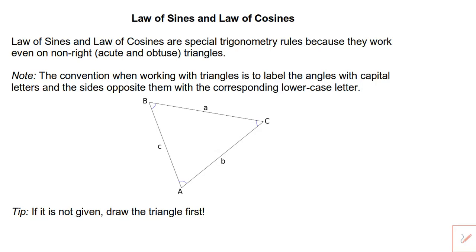You likely just learned that trigonometry only applies to right triangles. You know, for example, sine and cosine only work if one angle of a triangle is 90 degrees. Well, we're about to change all that because law of sines and law of cosines are special trigonometry rules that work even on non-right triangles like acute and obtuse triangles.